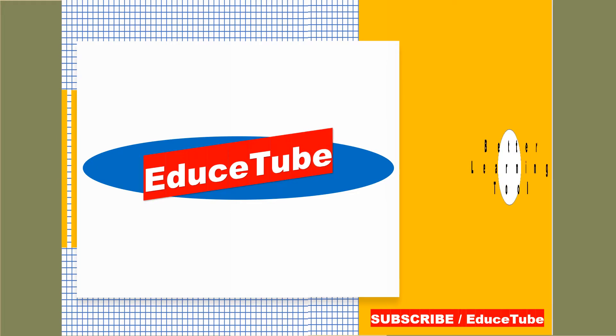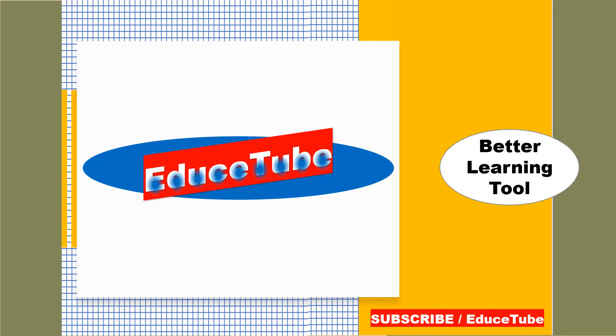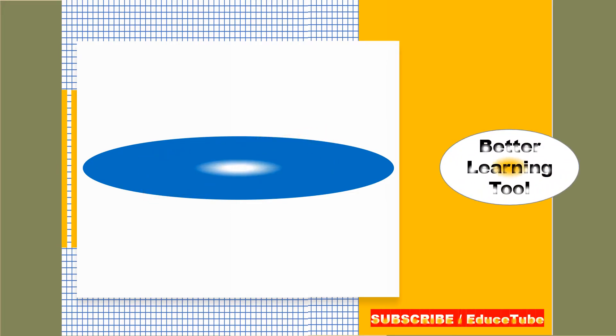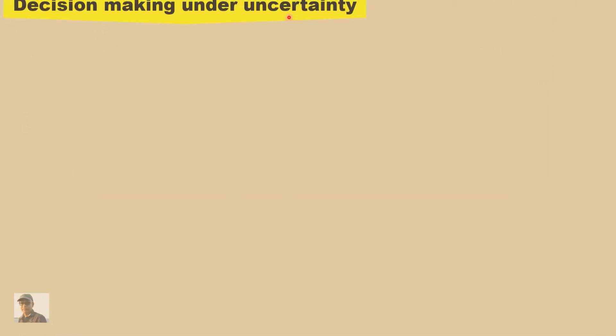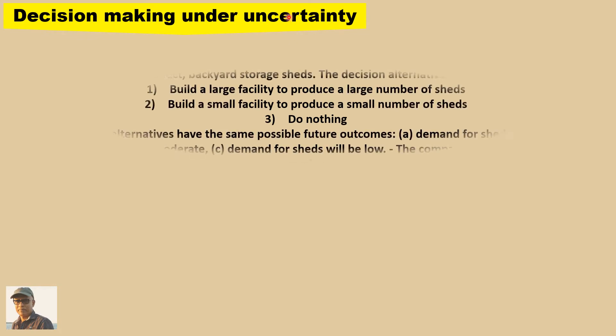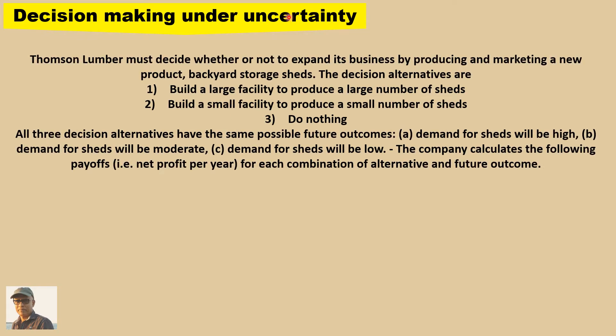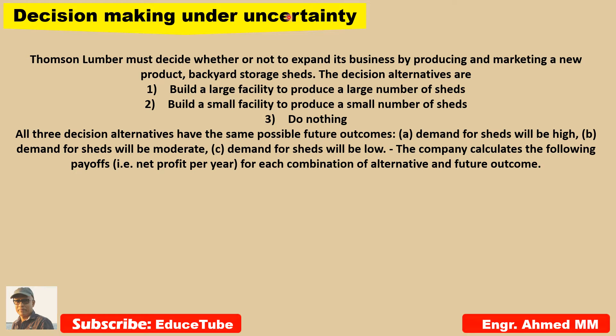Hi everybody. Today I am going to discuss decision-making under uncertainty — it means probabilities are unknown. In this case we can list the possible future outcomes but cannot estimate the probability that a specific outcome will occur.